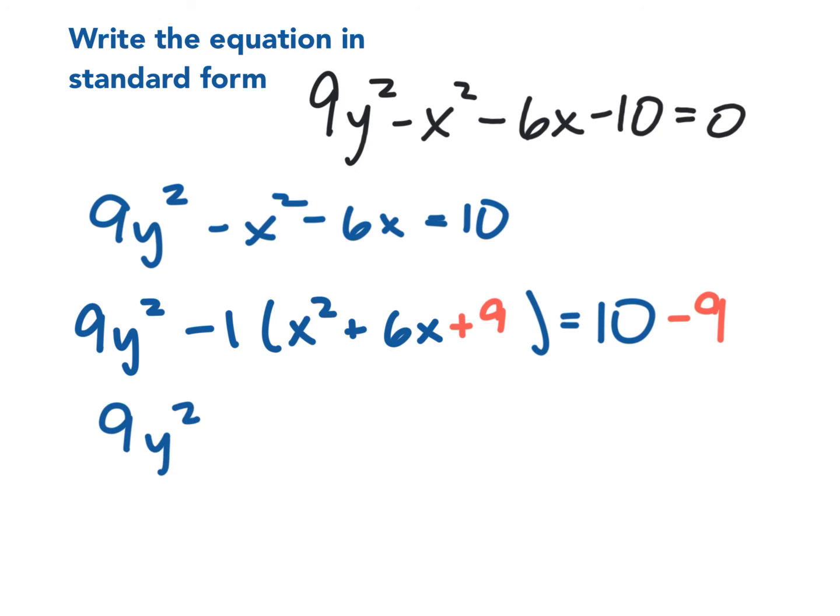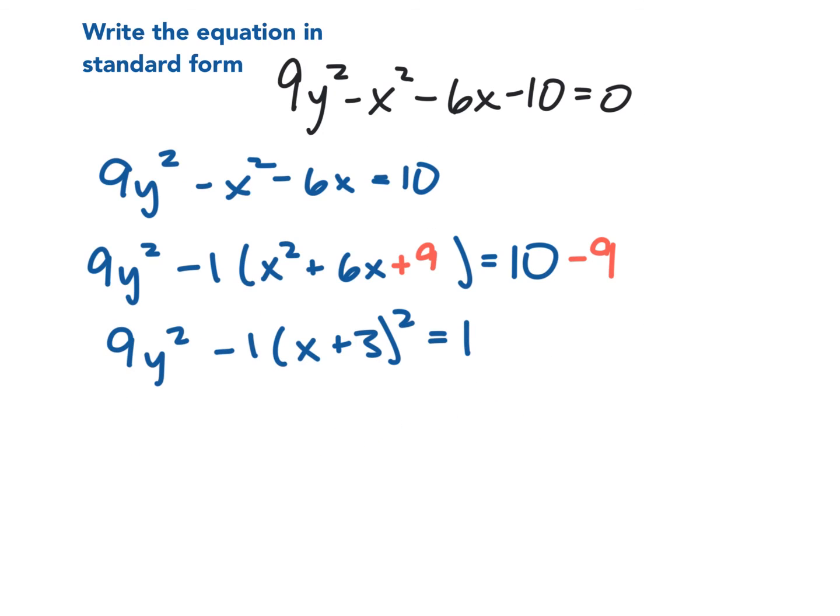And now I've got 9y² - 1(x+3)² = 1. Now we haven't really seen a problem like this where we're not going to divide by anything because we already have it set equal to 1, yet this isn't written as a fraction. But don't forget, we could rewrite this as y²/(1/9) - (x+3)²/1 = 1.